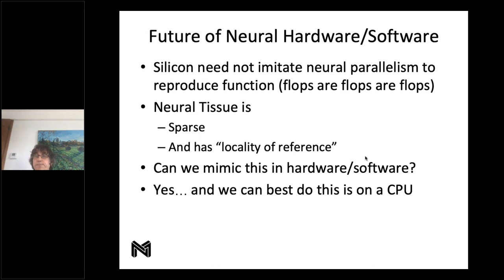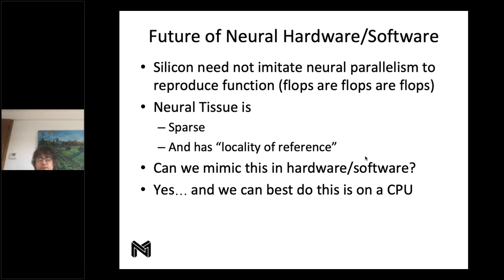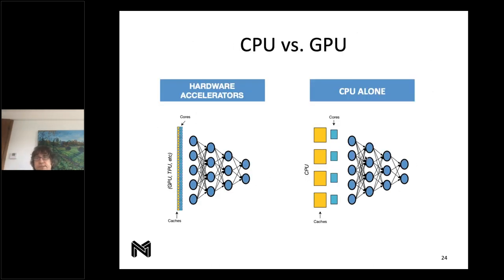People are building specialized hardware that brings computation close to memory — NeuroBlade is an example of a company building an accelerator that does computation on the memory. But right now, without those devices, the easiest thing is to do it on a CPU. That's what Neural Magic does — we take the learnings from neurobiology and make a modern CPU competitive with a GPU.